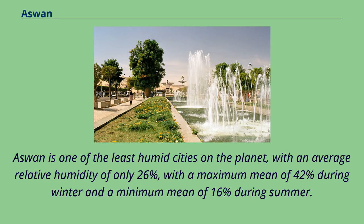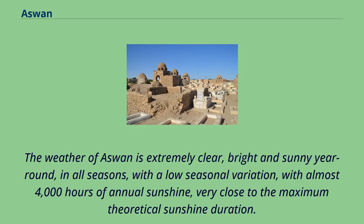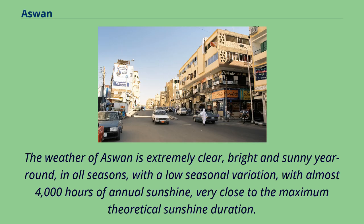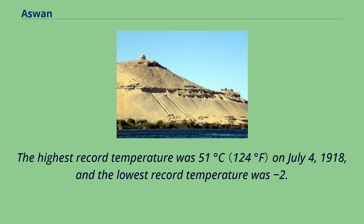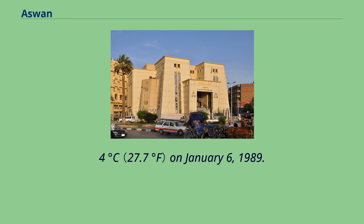Aswan is one of the least humid cities on the planet, with an average relative humidity of only 26%, with a maximum mean of 42% during winter and a minimum mean of 16% during summer. The weather is extremely clear, bright, and sunny year-round with low seasonal variation and almost 4,000 hours of annual sunshine, very close to the maximum theoretical sunshine duration. The highest recorded temperature was 51 degrees Celsius on July 4, 1918, and the lowest recorded temperature was minus 2.4 degrees Celsius on January 6, 1989.